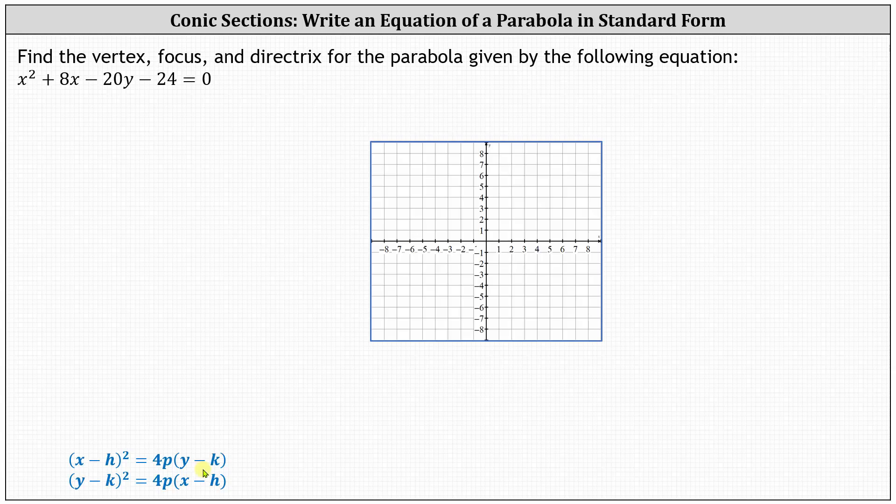To write the given equation in this form, we first isolate the x terms on the left and move the other terms to the right. This indicates the first step is to add 20y and add 24 to both sides of the equation.